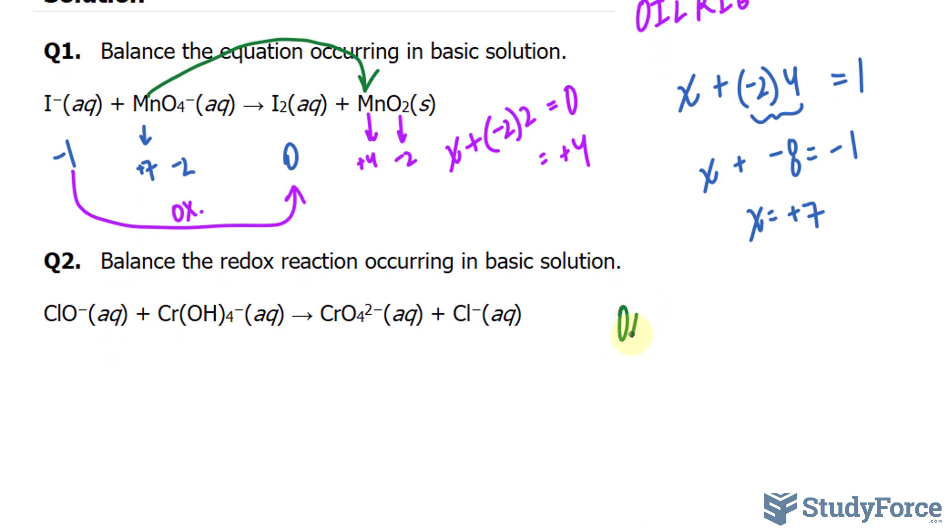So we have, for oxidation, I minus forming I2, they're both aqueous, and the other half reaction goes from MnO4 minus aqueous to MnO2 solid.